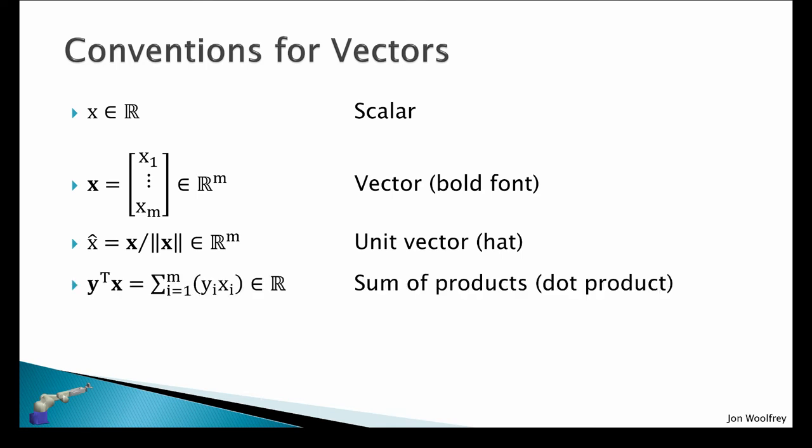Then we have the transpose between two vectors, so the transpose of vector y on x, and this gives the sum of the products of the elements in y and x, and in vector algebra this would be considered the dot product. We can also do the transpose of x on itself, so x transpose x, which gives the sum of squares within the vector x.